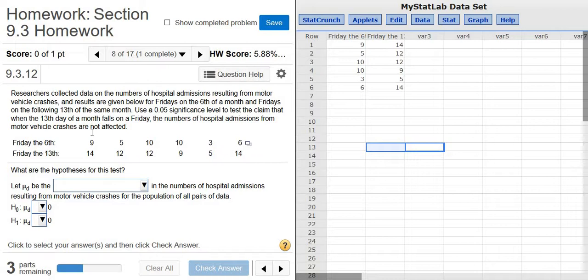Use a 0.05 significance level to test the claim that when the 13th day of a month falls on a Friday, the numbers of hospital admissions from motor vehicle crashes are not affected. We're trying to see if there's a difference between the number of crashes on the 6th and the 13th. What I've already done is I clicked this little box and clicked Open in StatCrunch, and then I have all the data in here.